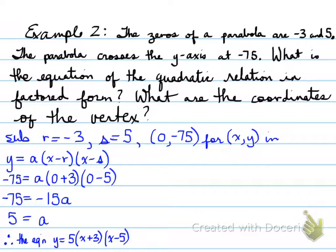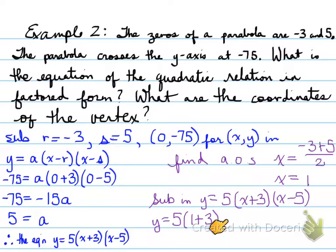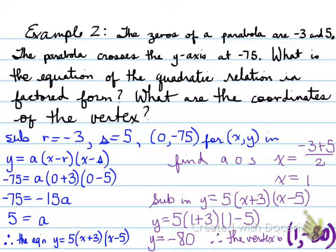Last part. What are the coordinates of the vertex? We have our zeros here. Knowing our zeros, we can find the axis of symmetry. Negative 3 plus 5, all divided by 2, which gives us 1. x equals 1 is part of our vertex, our axis of symmetry, which is also our x value of our vertex. Now we need to find the y value of our vertex. So we sub x equals 1 into the equation that we found, and we get y equals negative 80. So the vertex is 1 and negative 80.